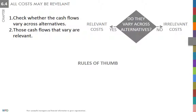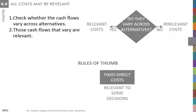Fixed costs can also be relevant. For example, buying special equipment to execute a specific order includes a relevant fixed cost – the acquisition cost of the equipment. This is an operating decision in which a fixed cost is a relevant cost. Opening a sales office is another case where most of the relevant costs are fixed.